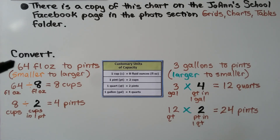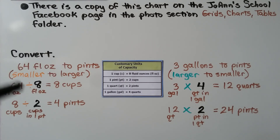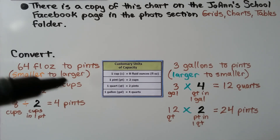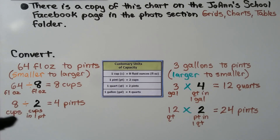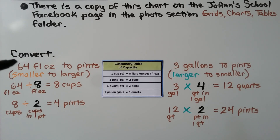We need to convert 64 fluid ounces to pints. Ounces are smaller than pints, so we're going from smaller to larger — we'll use division. Sixty-four divided by eight fluid ounces per cup equals eight cups. Then eight cups divided by two cups per pint equals four pints. So 64 fluid ounces equals four pints.